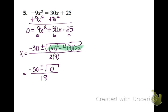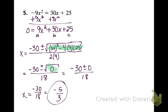So any time you end up with a 0 in the square root right here, you will only have one answer. The reason is because square root of 0 is just 0, and negative 30 plus or minus 0 is negative 30 either way. So my only solution is going to be negative 30 over 18, which simplifies to negative 5 over 3. So this quadratic only has one solution.